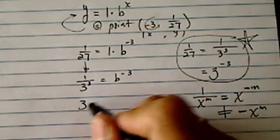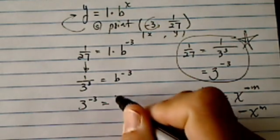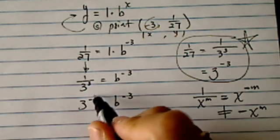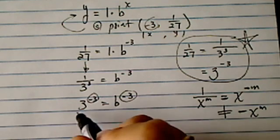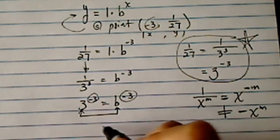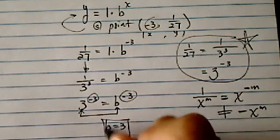Now from here, you can either say three to the minus three is equal to B to the minus three. Looking at the exponents, it's the same, then I'm going to equate the bottom, which is B equal to three. Has to be.